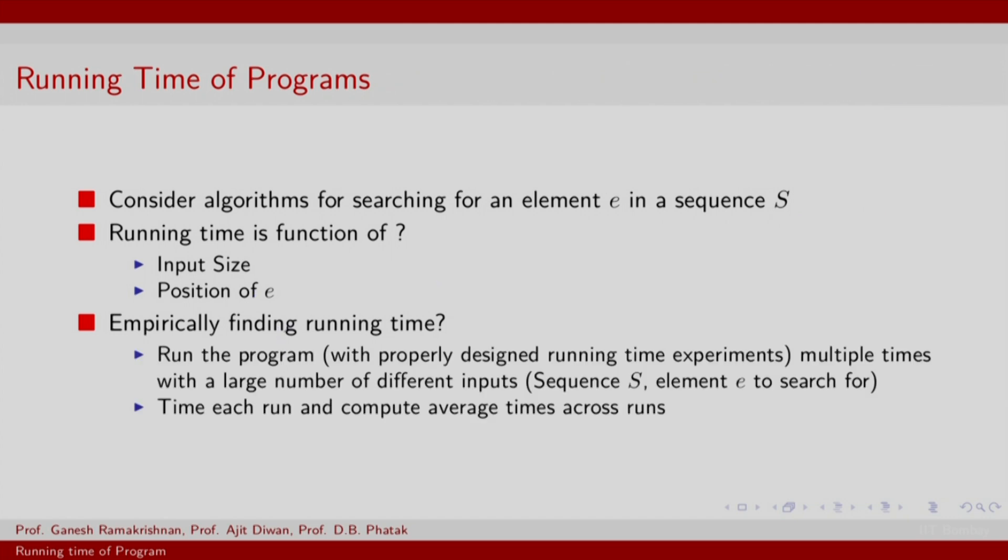To empirically find the running time, you need to do the following. One, you need to run the program and this is based on the choice of the algorithm. We will discuss two algorithms for finding such an element. Now, you will need to run the program corresponding to the algorithm not once, but multiple times and that too with a large number of different kinds of inputs. What is the difference in the inputs? Well, with change in the input size and position of e, you will have different inputs. For every run, you will need to compute the time to run, the wall clock time and also compute average times across runs.